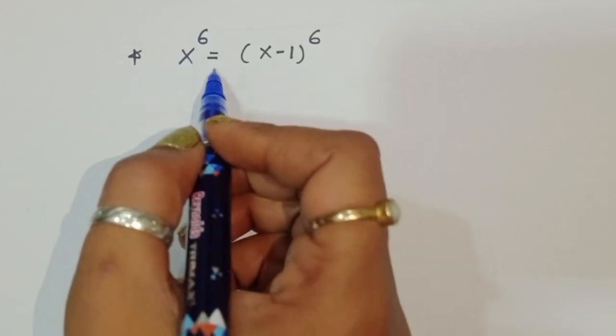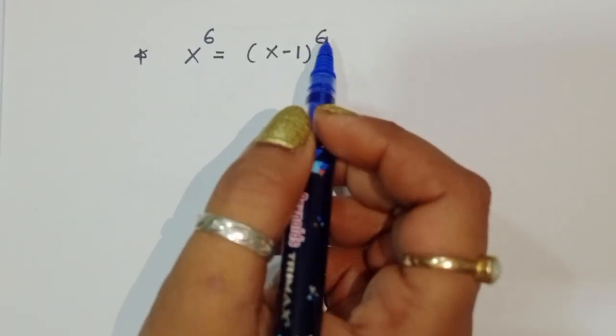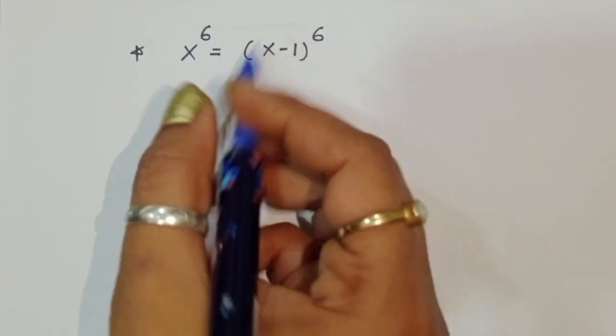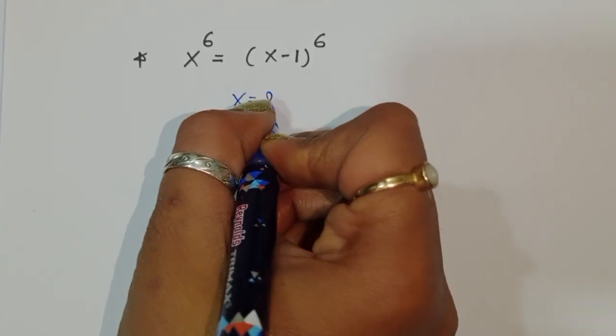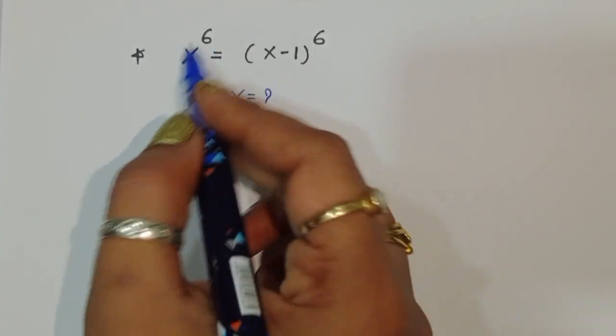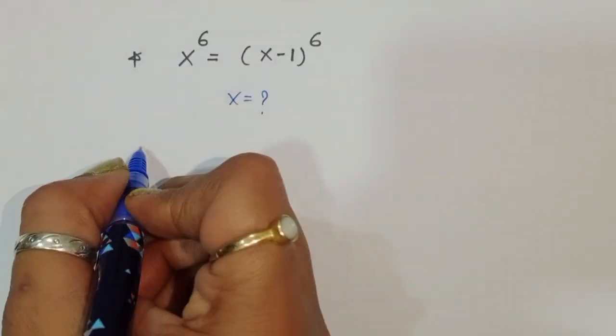When x power 6 is equal to x minus 1 power 6, we have to find out the value of x. Let's see the solution.